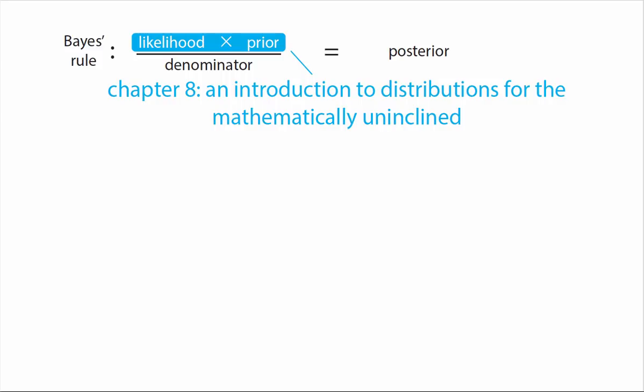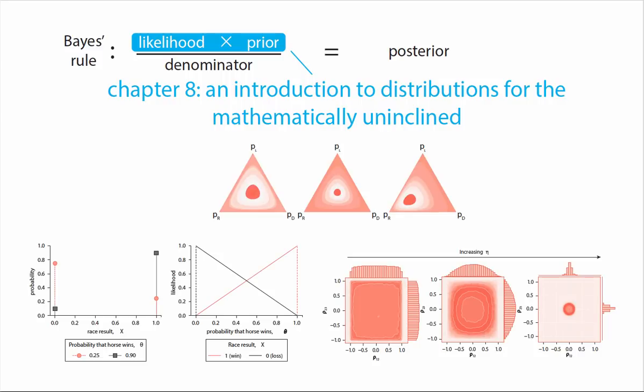This chapter aims to introduce the most common distributions and explain what they are and what they can be used for with as little math as possible. We start with simple distributions like the Bernoulli distribution and move into more complex examples like the Dirichlet and some more recently introduced distributions like the LKJ distribution.